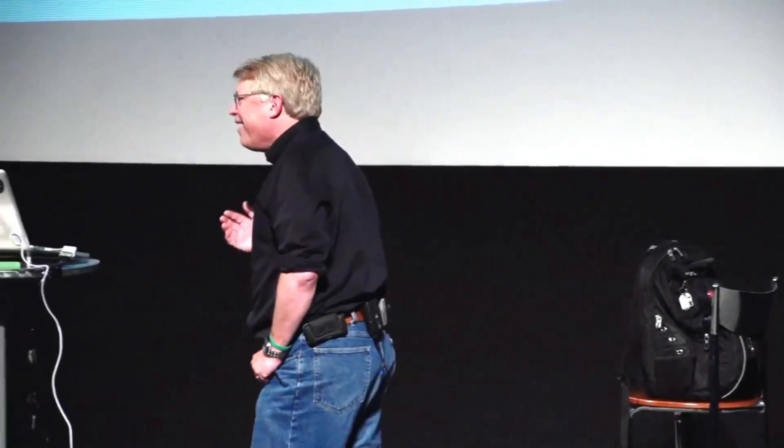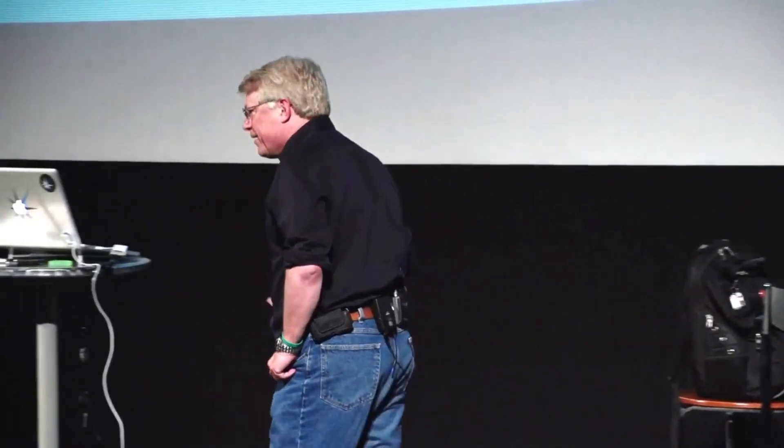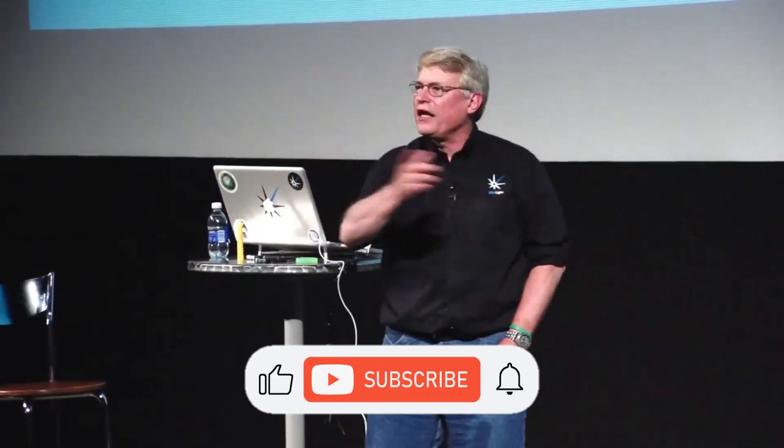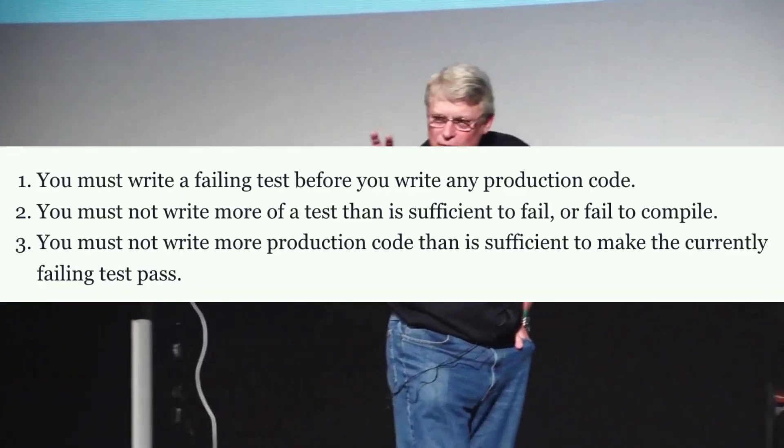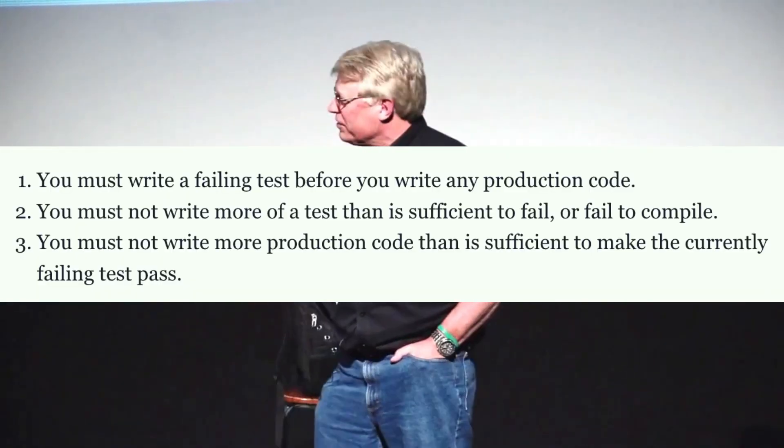You read the code because the code will tell you the truth. These little unit tests that we're writing — four, five, six, ten lines long — are little documents that describe how every part of the system works. You want to know how to create an object? There are tests that create that object every way it can be created. You want to know how to call an API? There are tests that call that API every way it can be called. And those tests are written in a language you know. They are utterly unambiguous. They are so formal they execute, and they cannot get out of sync with the system. They are the perfect kind of documentation. Just these dumb three laws gives us the perfect low-level documentation for a system.